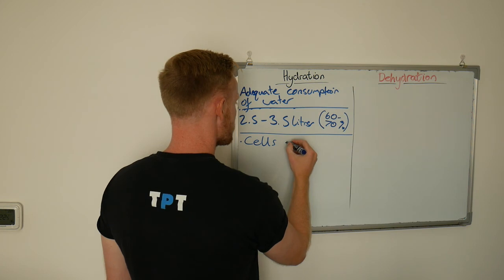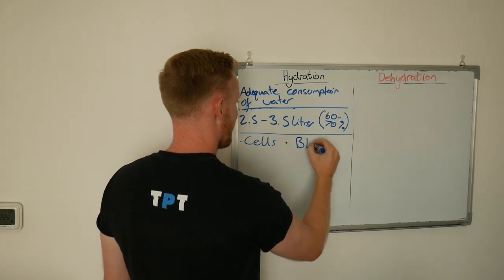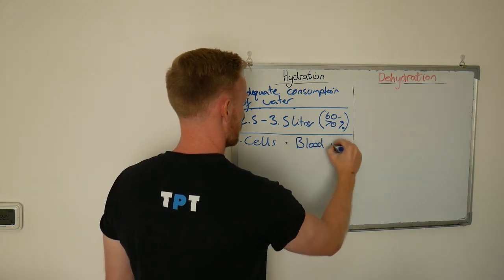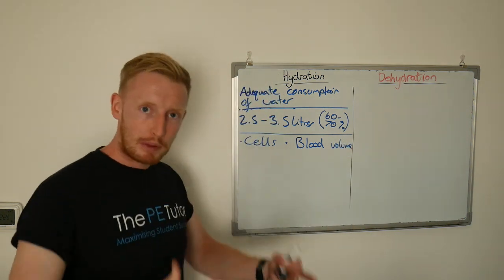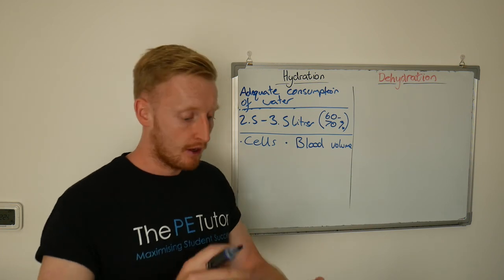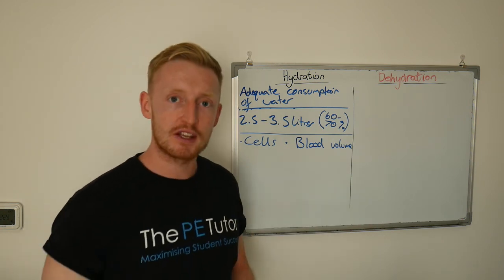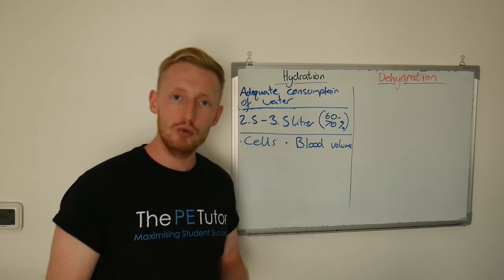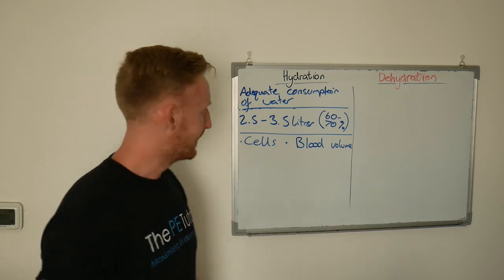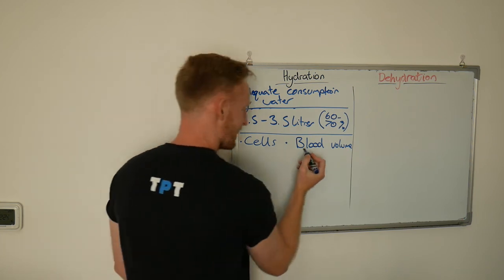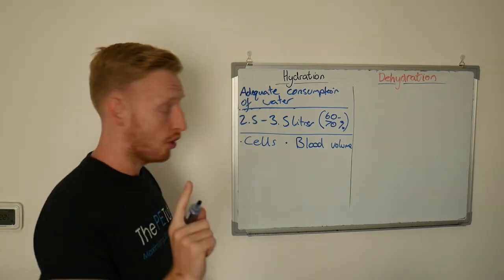It forms a large part of our blood volume. So a lot of our blood is actually water-based. Now the blood also has red blood cells, white blood cells. It carries blood sugar, glucose, our haemoglobin, it carries oxygen, CO2, lactic acid. It carries all of these different things. And if we get less blood, that is not a good thing.